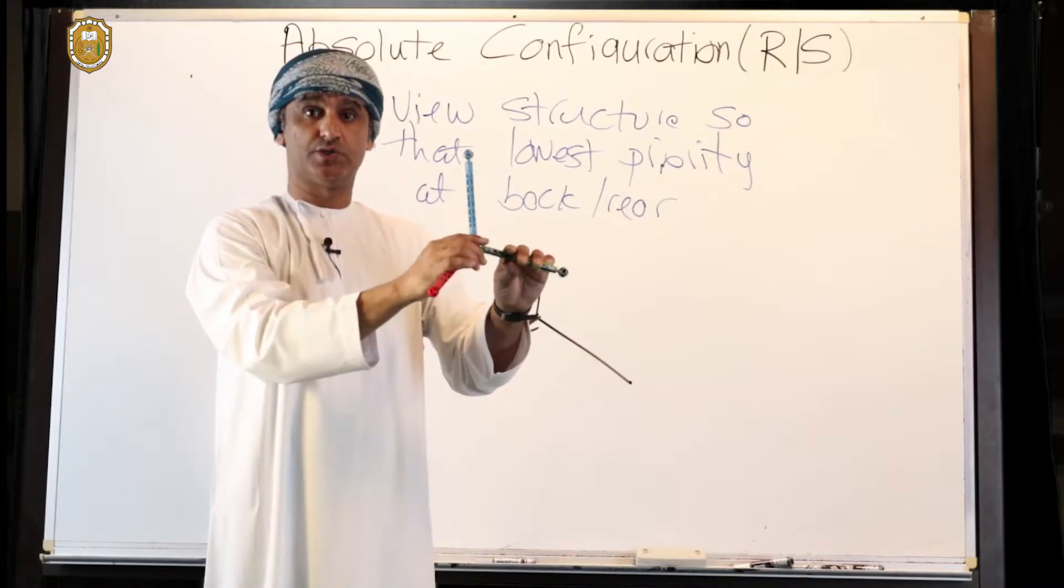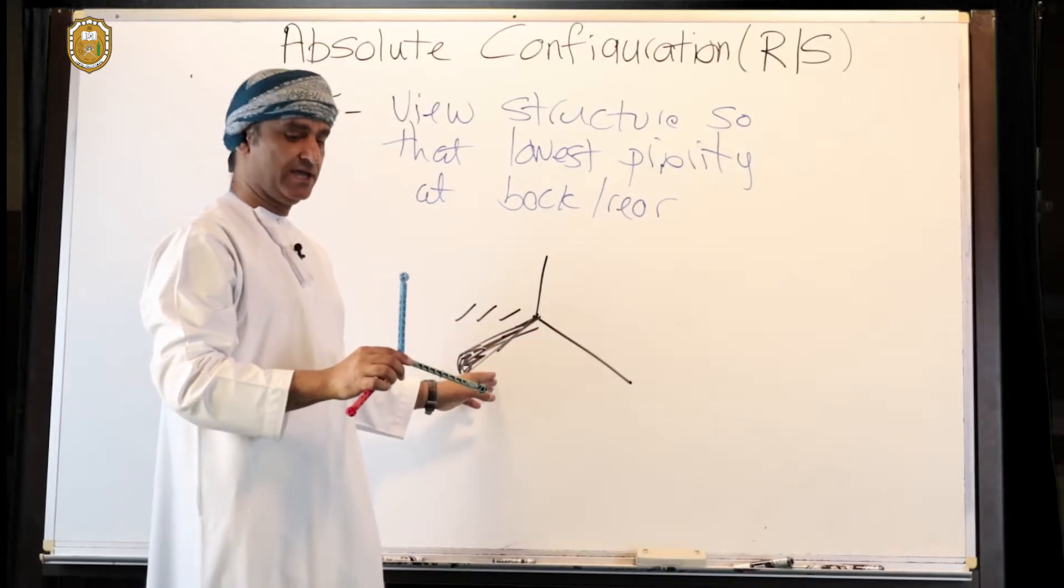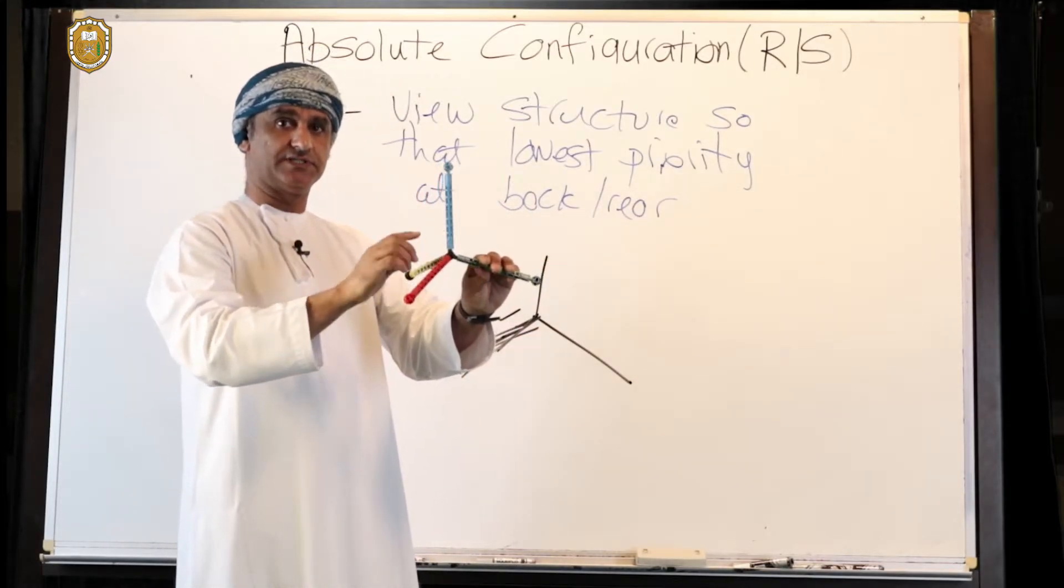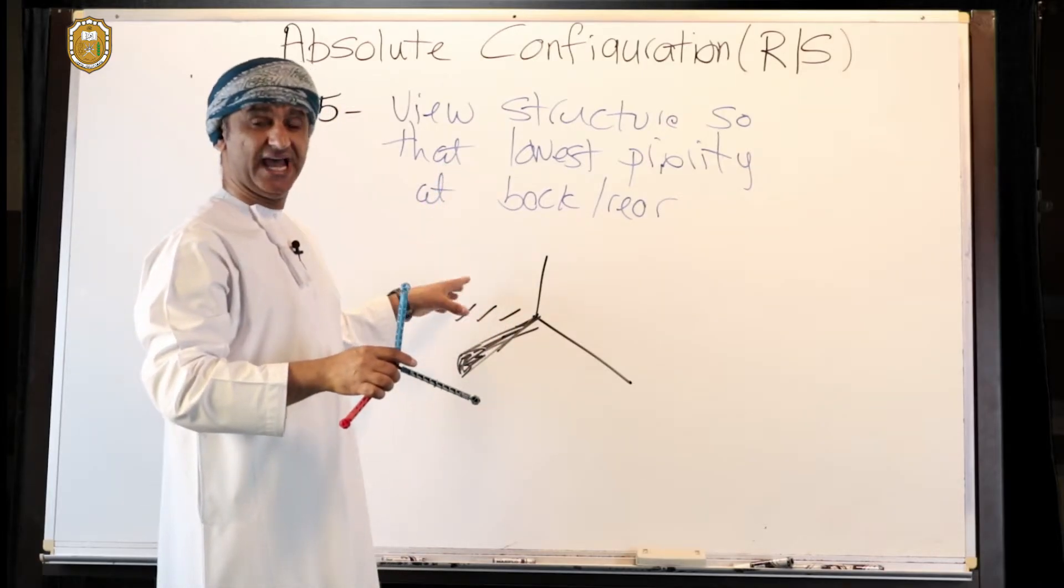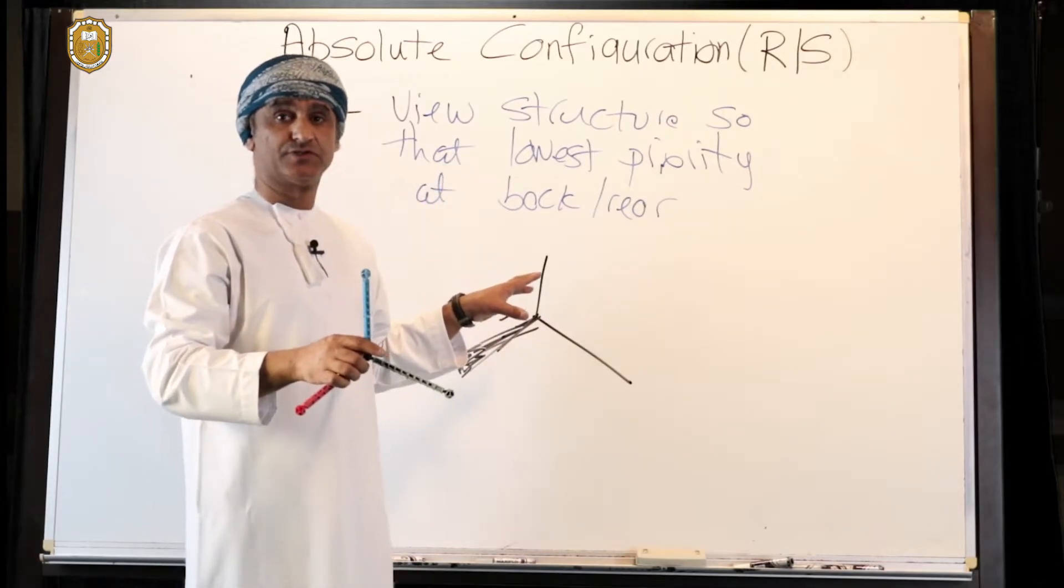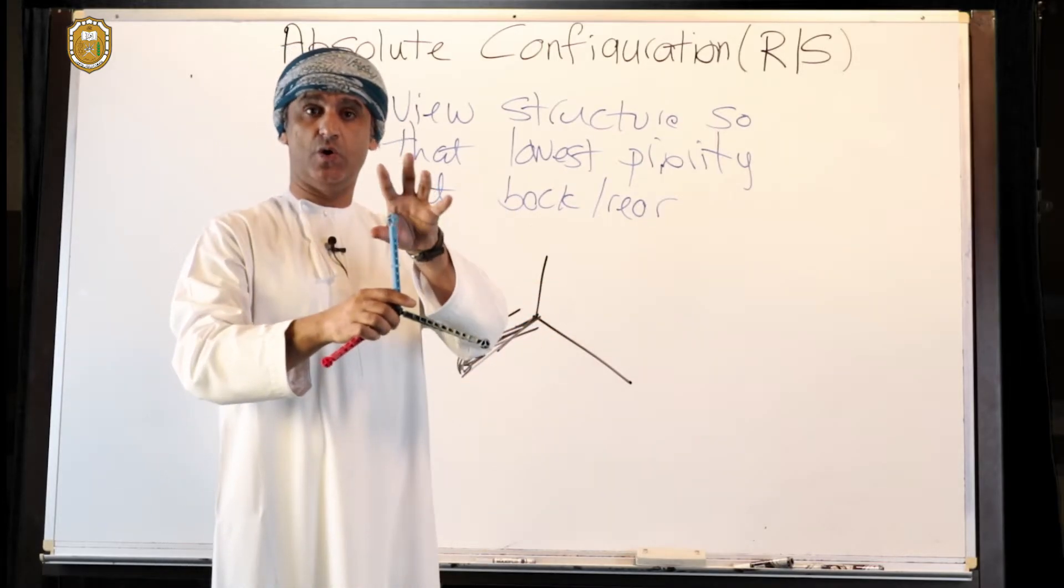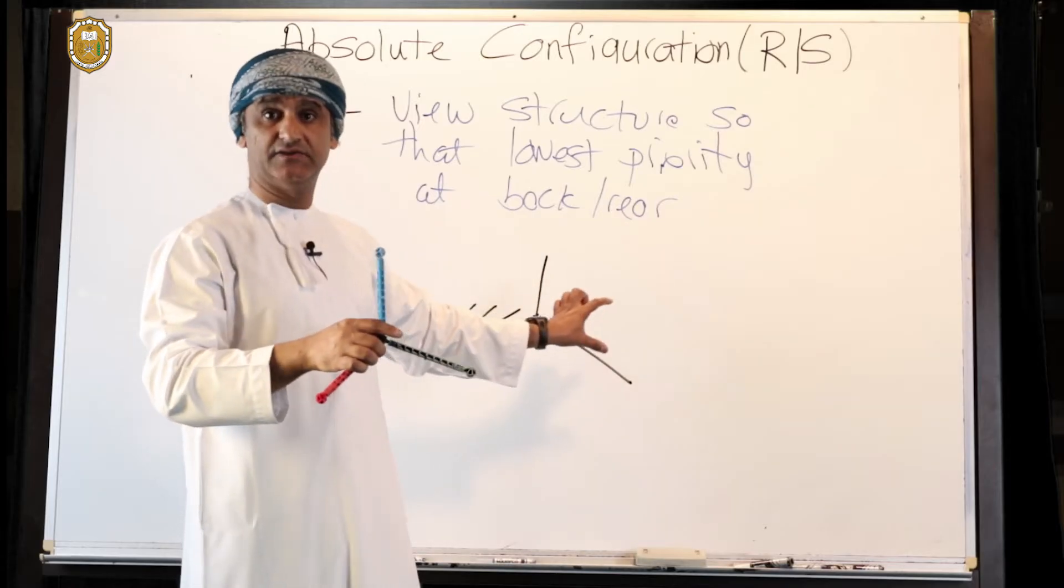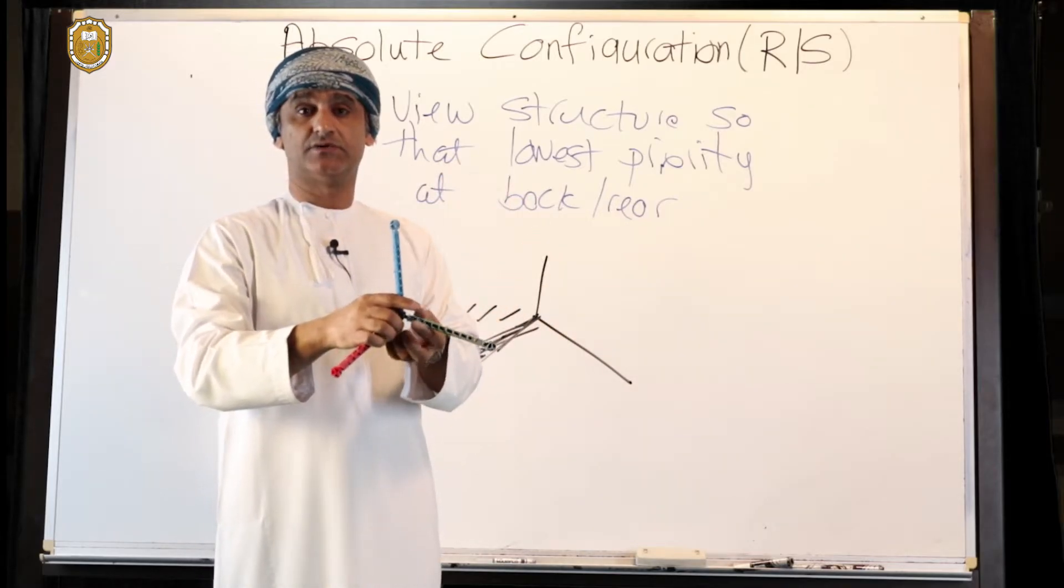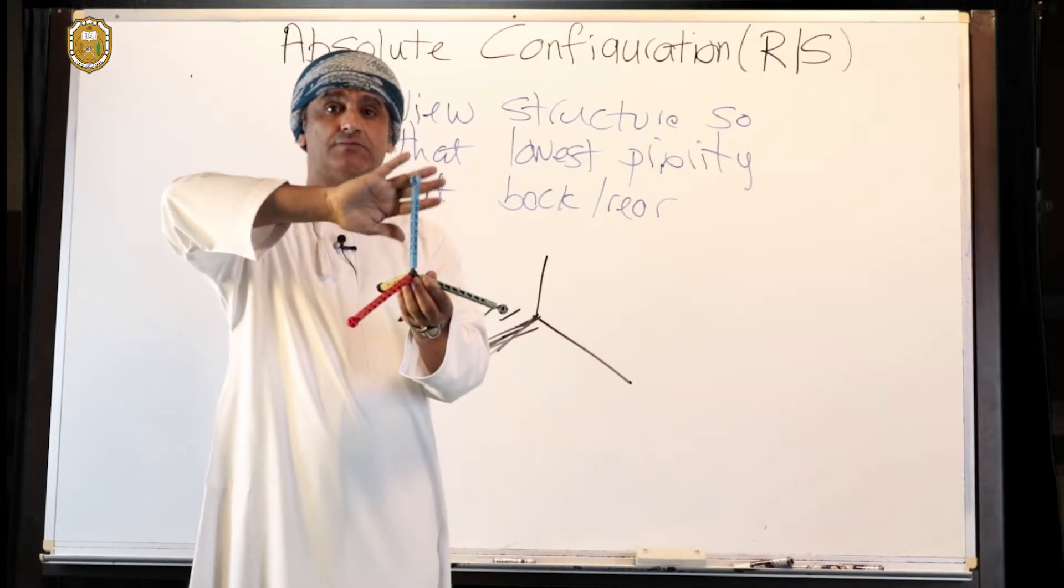So that's why this bond is shown as a heavy wedge line, and that's also why this bond, for example, is shown as a dashed line or a dotted line. So now the lowest priority group can be anywhere—it can be on a solid line, if you like.